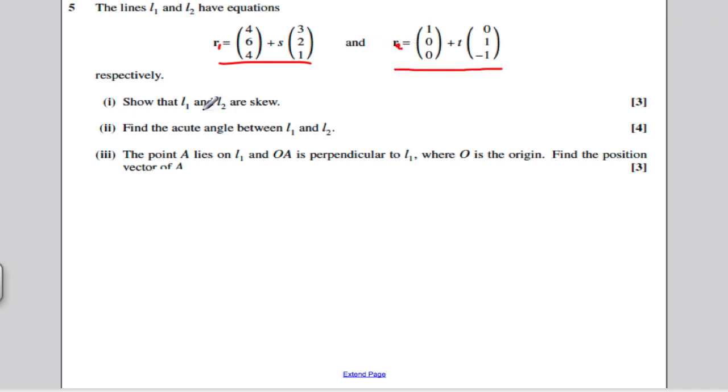Question 5, it was a 10 mark question and it told us that we have lines L1 and L2 given by the vector equations as follows. I'm going to call that R1 and I'm going to call that R2. It says show that lines L1 and L2 are skew.